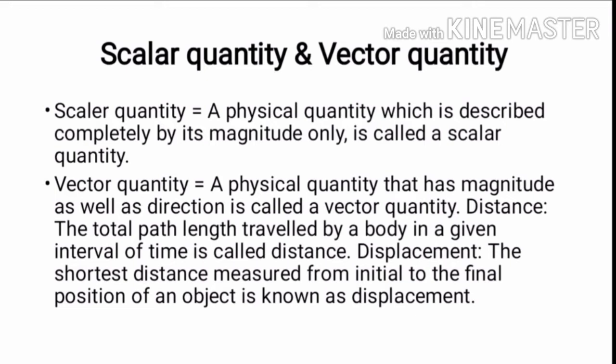What is distance? The total path length travelled by a body in a given interval of time is called distance. Displacement is the shortest distance measured from the initial to final position of an object.